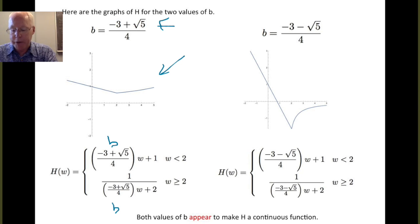If b is equal to minus 3 minus root 5 over 2, then we replace b by that number. So again, here's where the b was in the original formula. And again, if we graph that function, we come up with this. Again, it looks good at 2. There's no break. The open dots, the function defined there, it looks like the limit agrees with the function value. So again, it appears that this value b also makes h into a continuous function.